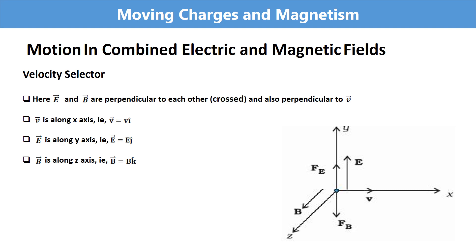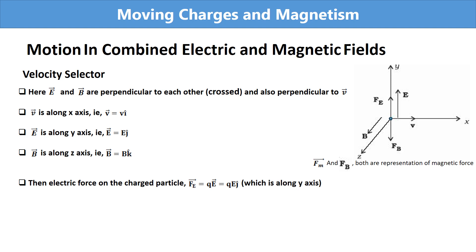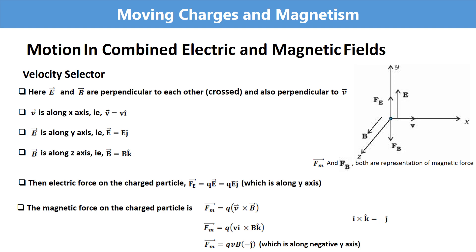The electric field is along the y direction, written as EJ, and the magnetic field is along the z direction, written as BK. The electric force on the charged particle is FE = QE, so the direction of the electric force is the same as the electric field — in the positive y direction. The magnetic force on the charged particle is Fm = Q(v × B). Substituting the values of v and B, the magnetic force is in the negative y direction, shown as Fb in the figure.